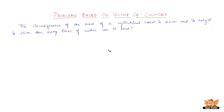Before we start solving the problem, let us go through the brief outline of the methodology. The data given is the circumference of the base of the cylindrical vessel. The circumference is nothing but 2πr, and its height is 25 cm.